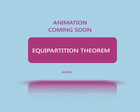The equipartition theorem can be used to derive the ideal gas law and the Dulong-Petit law for the specific heat capacities of solids. It can also be used to predict the properties of stars, even white dwarfs and neutron stars.